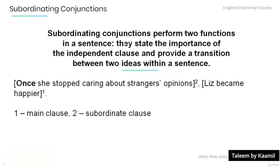Note that subordinating conjunctions perform two functions in a sentence: they state the importance of the independent clause, and provide a transition between two ideas within a sentence. Have a look at the example: 'Once she stopped caring about strangers' opinions, Liz became happier.' Note that 'Liz became happier' is the main clause, and 'once she stopped caring about strangers' opinions' is the subordinating clause.